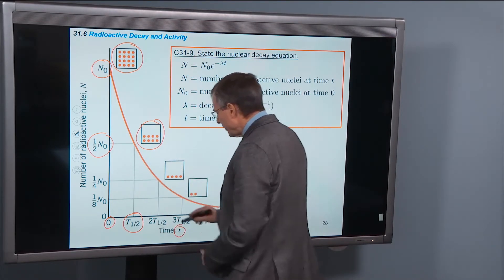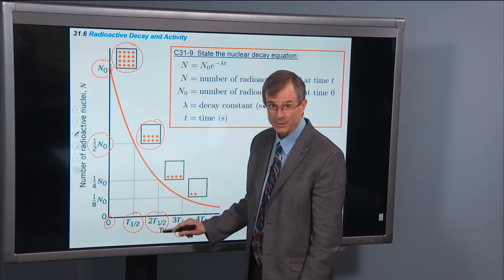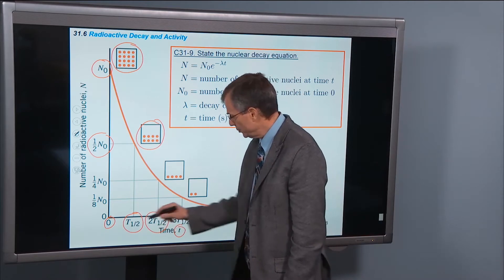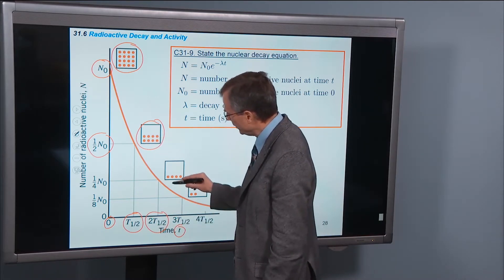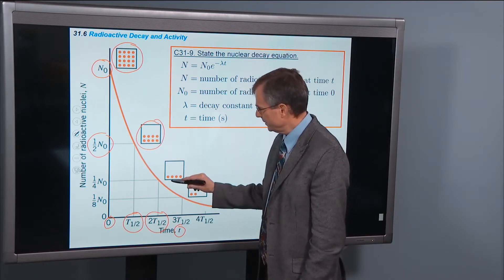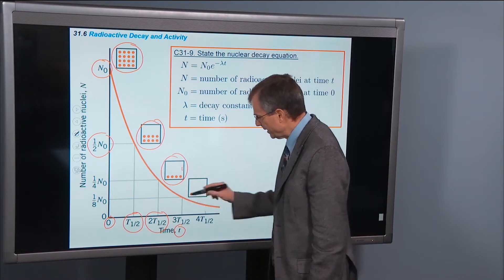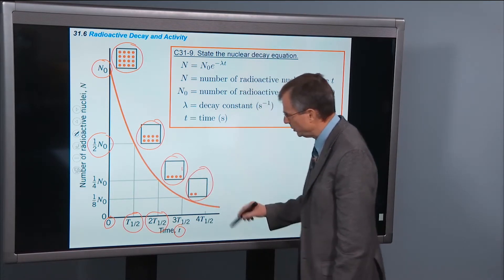Then you wait another half-life. So now this is, instead of T½, this is 2T½, 2 half-lives, then we will have lost half again of the second amount, which is half of 8, which is 4 by this time. And then wait another half-life and we're down to 2.